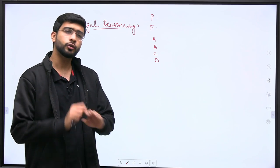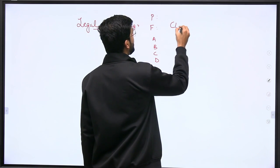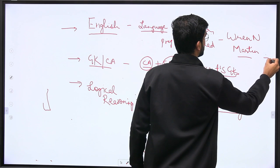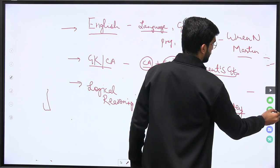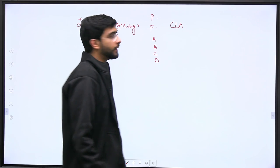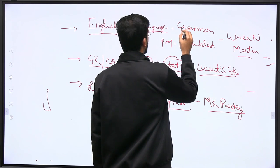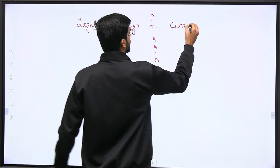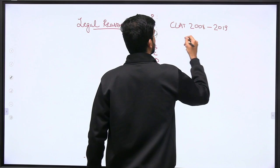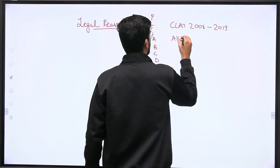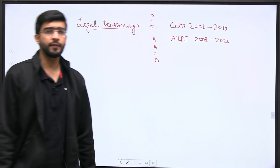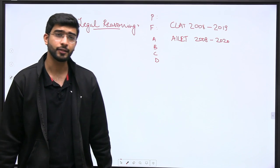So what you can do for legal preparation is you don't have to take any class for legal. You just have to solve CLAT papers from 2008 to 2019, and AILET papers from 2008 to 2020. Just solve the legal reasoning part of these entire papers. This will be good enough to take you through this exam for legal reasoning particularly.